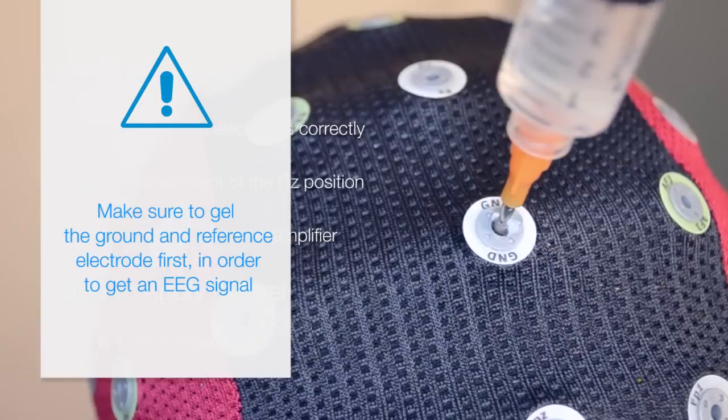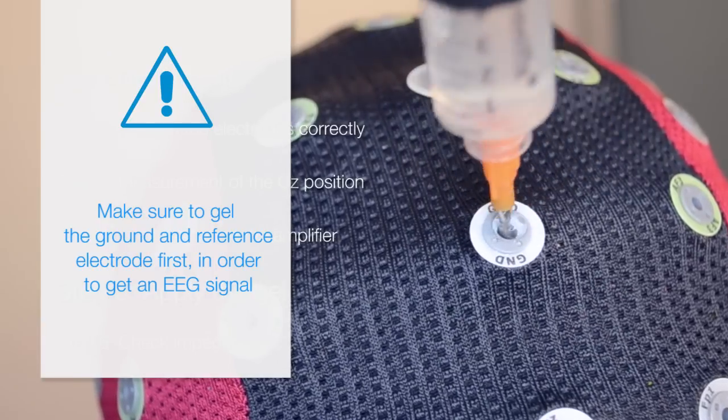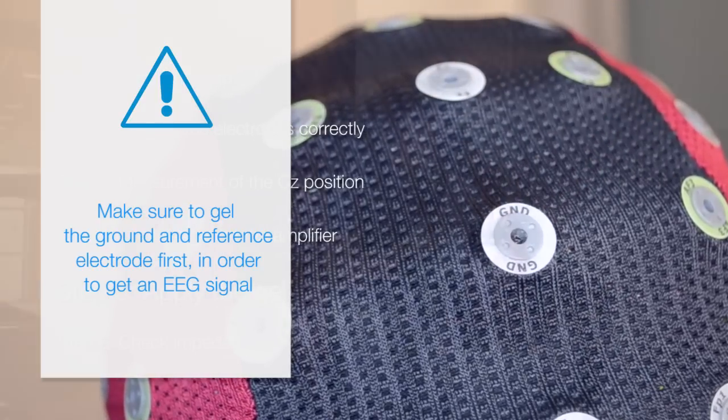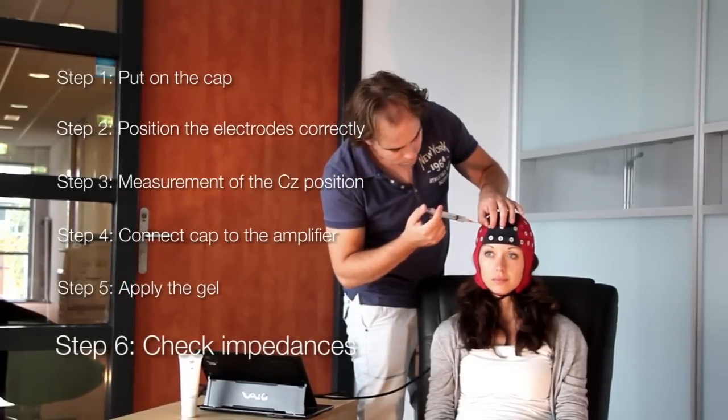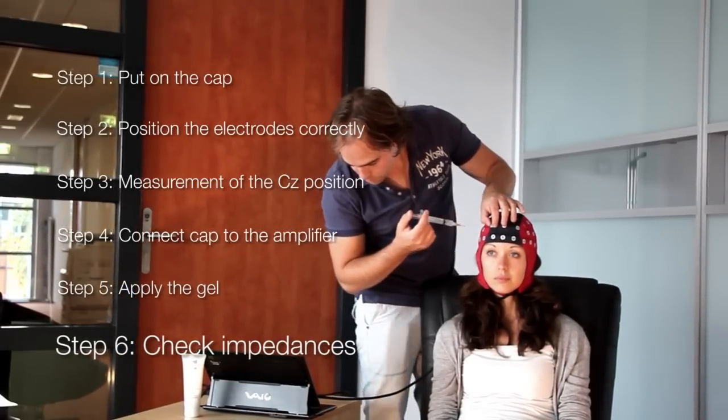Continue the flow of gel as the needle is withdrawn to ensure that the electrode cup is fully filled. Take care not to apply too much pressure to the scalp while injecting gel, especially at the temples and mastoids where the skin is sensitive.